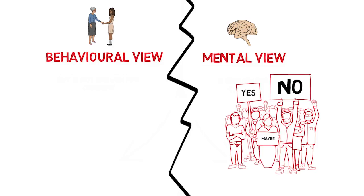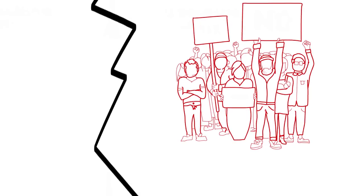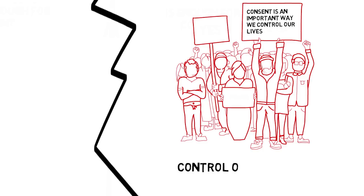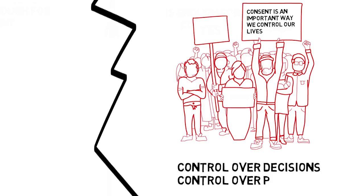What other reasons are there for accepting the mental view or the behavioural view? Some people say we should accept the mental view because consent is an important way that we control our lives. Since we have complete control over which decisions we make, the mental view would imply that you always have complete control over what you permit people to do. You get to control whether it's okay for your neighbour to use the drive just by deciding one way or the other — no further action is required.